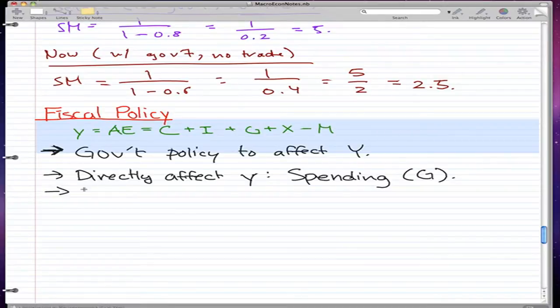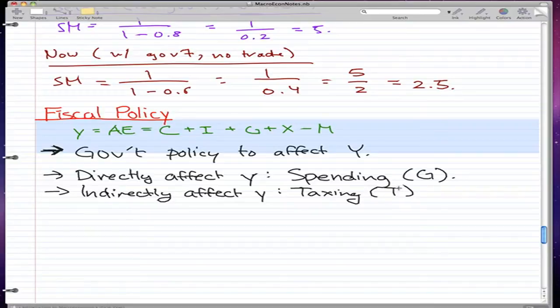And they indirectly affect Y in another way, and that is through taxing. So they directly affect Y by spending and they indirectly affect Y by taxing.